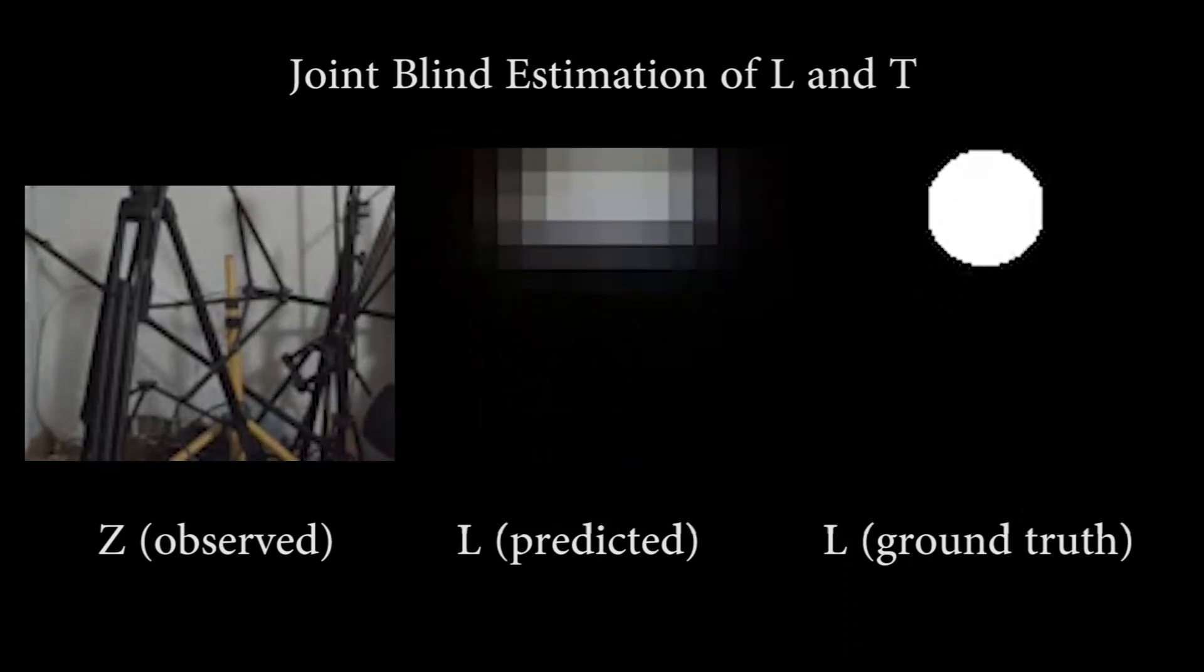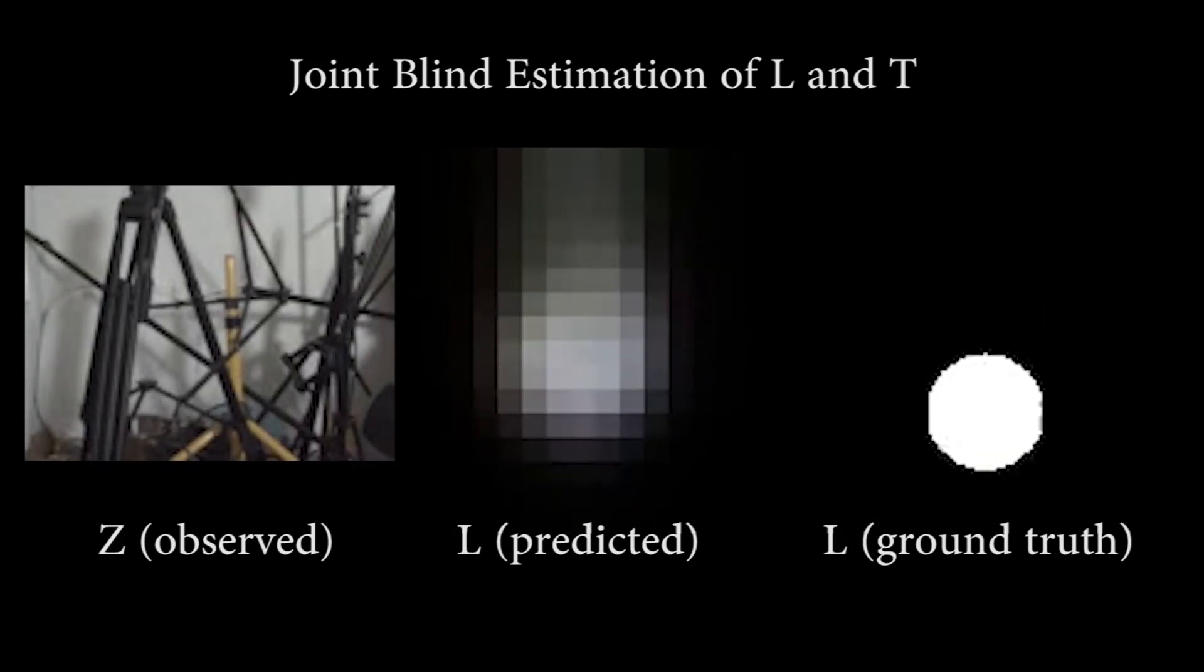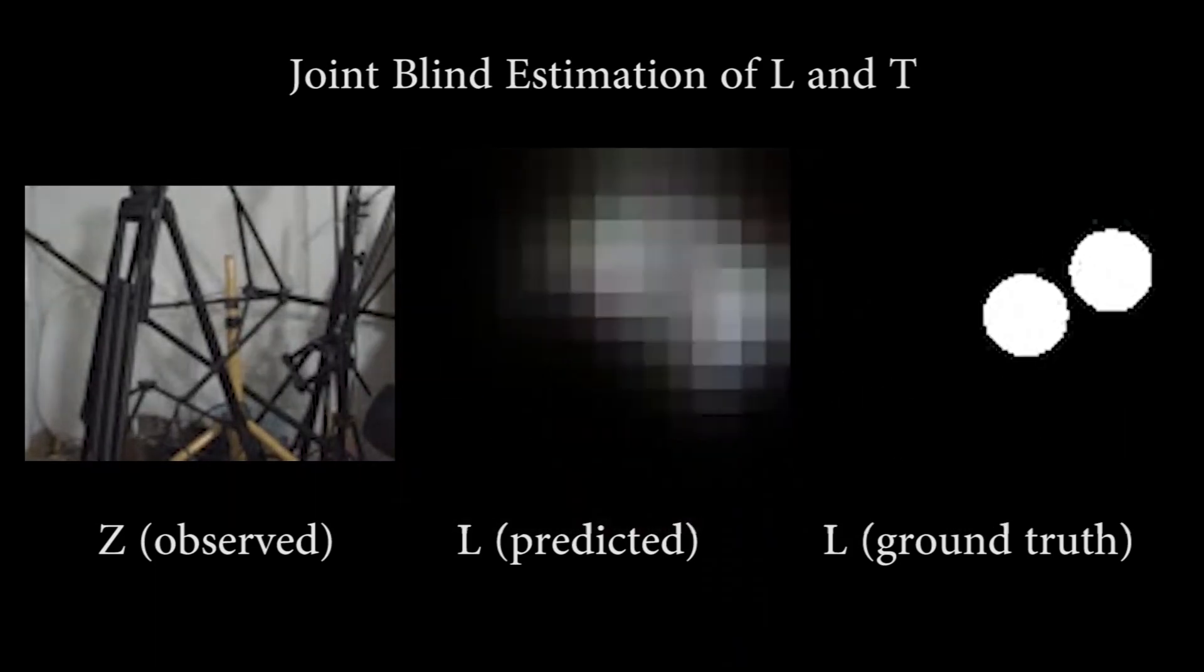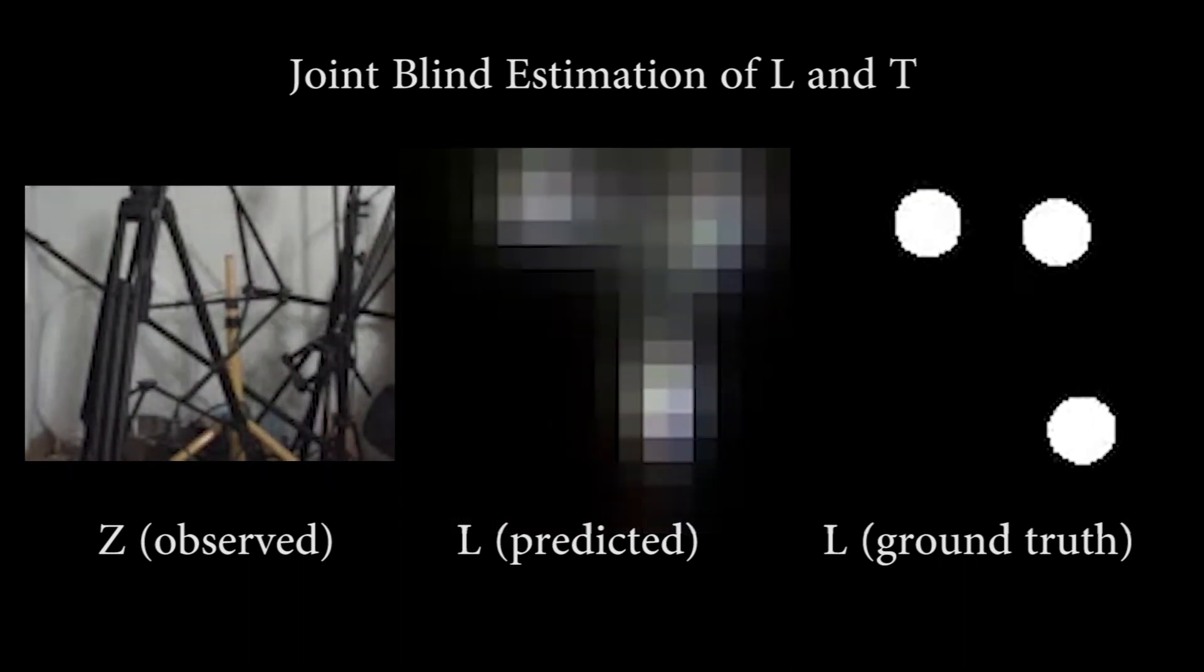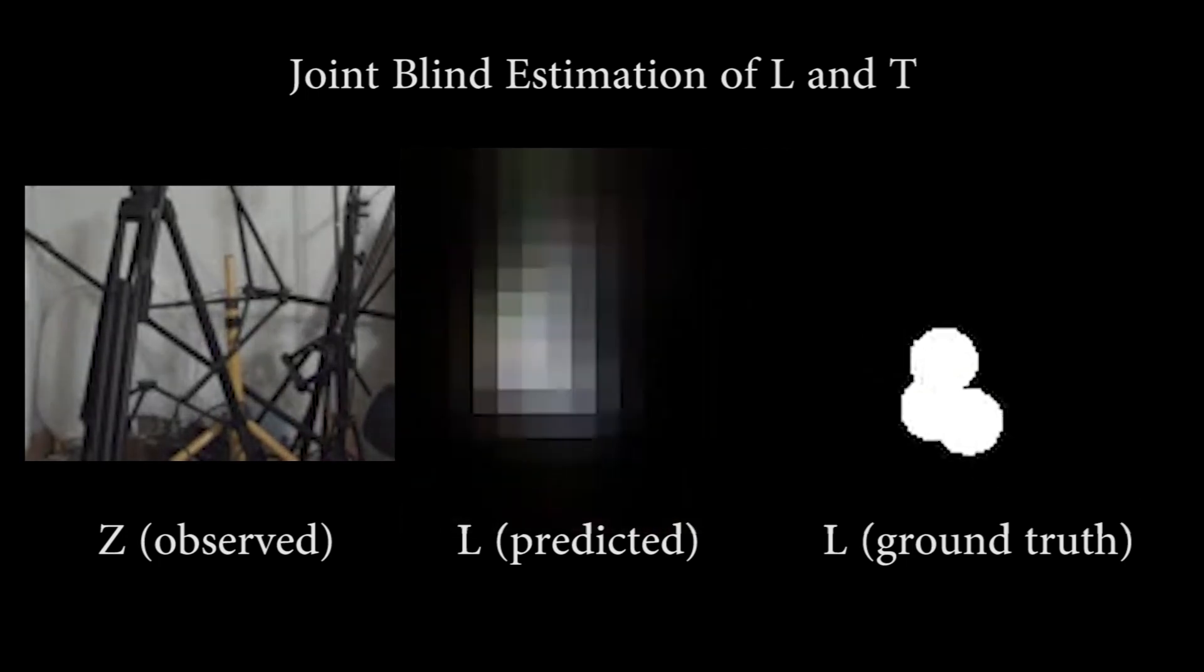We start with a simple dataset of one or more white disks against a black background. We see that our method successfully identifies the three separate dots and their relative motions.